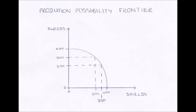Hello everybody and welcome to this microeconomic video on production possibility frontiers. So firstly, what are production possibility frontiers, or PPFs as we sometimes know them? A PPF shows the different combinations of goods an economy can produce when it's working at full efficiency. In this case on our diagram our two goods are swords and shields, and our axes show how many of them we can produce. If our economy is working at a point on this curve, then we are working at full efficiency.